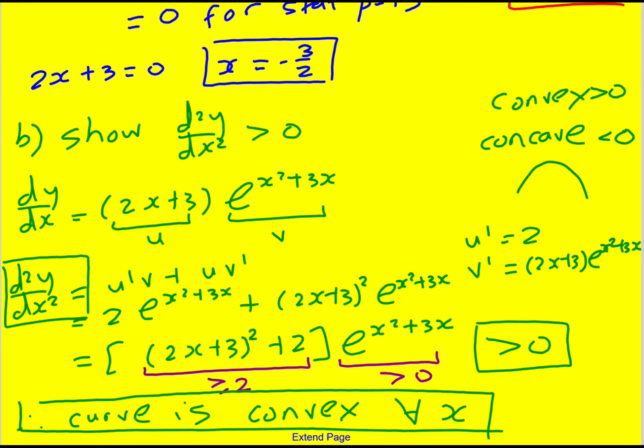So I hope that makes sense. We've found the second derivative. We've said the exponential is always positive. I don't have to write loads of reasoning down. This expression in completed square form is always greater than 0 because it's greater than or equal to 2. That means overall the second derivative is greater than 0 and therefore it's convex.